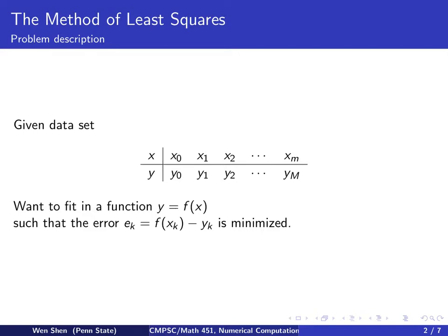Here's a problem description. We are given a data set as shown here: x0, x1, x2, all the way to xm, so m plus 1 points with the corresponding y values. With this data set, we want to fit in a function y equals f(x), where there are some parameters in this function. We want to adjust the parameters such that the error, which is the distance between the function you try to fit in and the y data, is minimized. Note that this is not an interpolation problem. The function you fit in does not exactly interpolate the data.